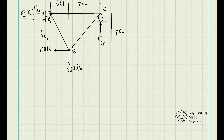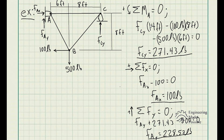The first step, based on the external forces being applied to the truss, is to solve for the reactionary forces. For static equilibrium we use the sum of moments about point A equals zero, summation of forces in x equals zero, and summation of forces in y equals zero. We get FCy = 71.43 lb, FAx = 100 lb, and FAy = 228.57 lb.